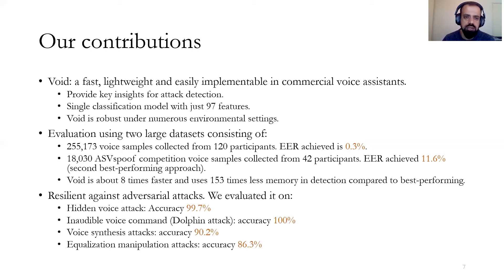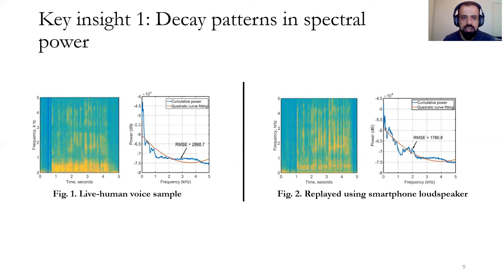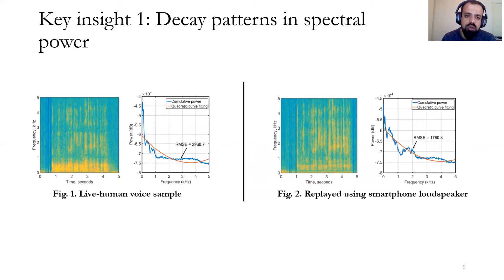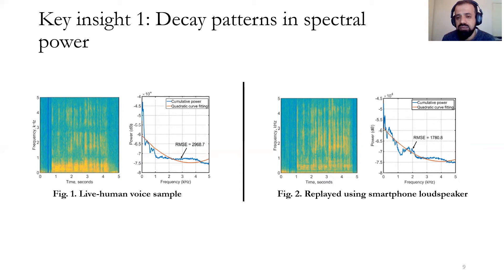Here we discuss key insights used in Void for attack detection. One is the decay pattern in spectral power. The left side of Figure 1 shows the spectrogram of a live voice, where most power is concentrated below 1 kHz. The accumulated power per frequency shows an exponential decay pattern below 1 kHz. Figure 2 shows the spectrogram of replayed voice from a smartphone loudspeaker, where power appears uniformly distributed between 0 and 5 kHz, and the decay pattern is more linear.